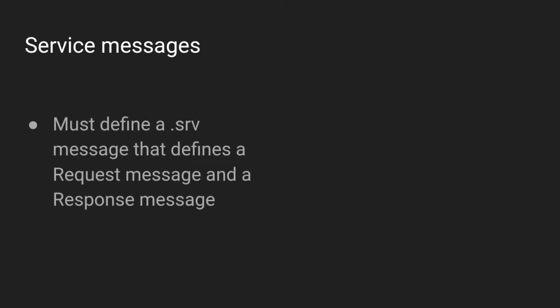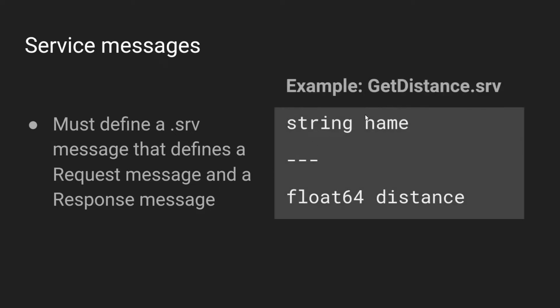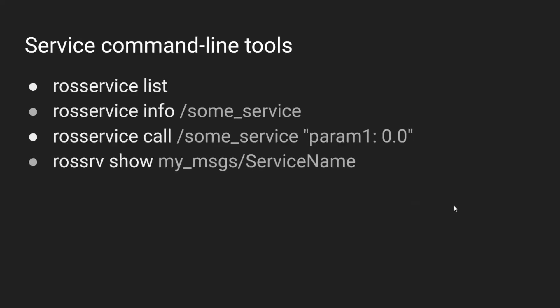We need a way to create request and response messages, so we define a .srv file. It's very much like a ROS message except you're defining two messages at once in the same file: a request message and a response message. The request is at the top, and three dashes (---) separate it from the response message at the bottom.